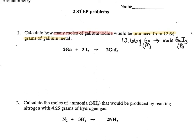The only way to get from one material to a different material is to use the mole-to-mole ratio, which uses the coefficients from the balanced equation. I can't use my mole-to-mole ratio until I get my 12.66 grams of gallium into moles. So my steps are: first convert grams of gallium to moles of gallium, then use my mole-to-mole ratio to find moles of gallium iodide, and then I'll have my answer.